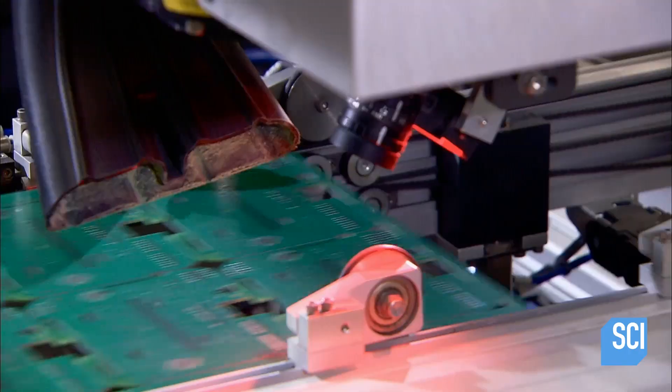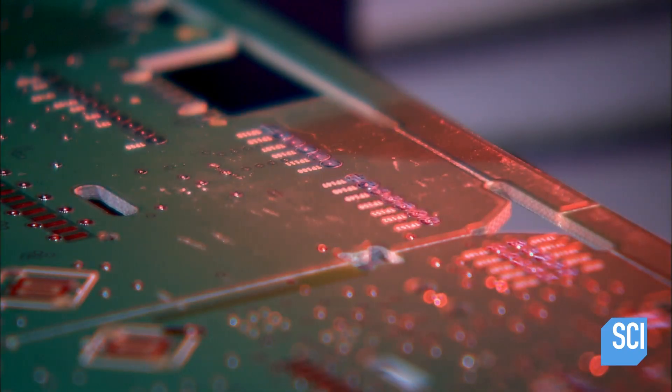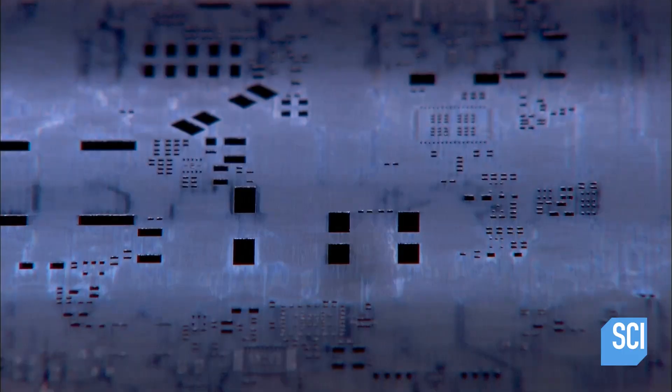One panel yields six or eight identical circuit boards depending on the meter model. In the first machine, for tracking purposes, a laser etches a serial number for each future circuit board.